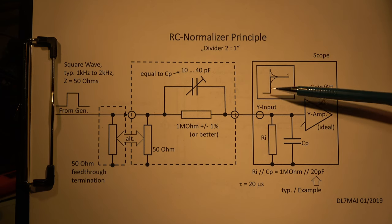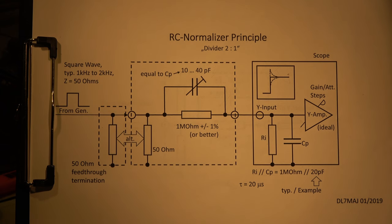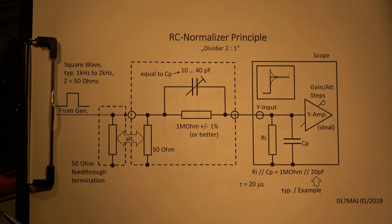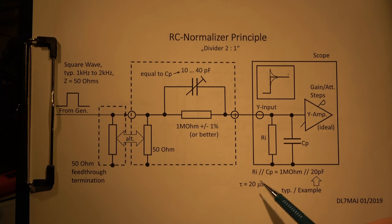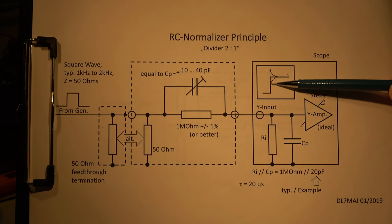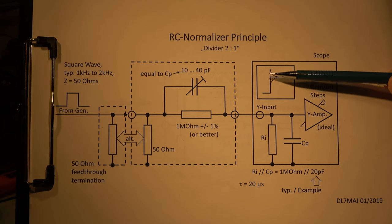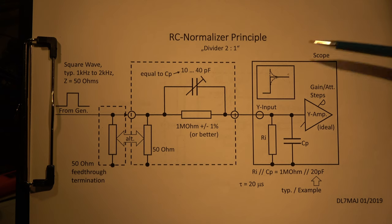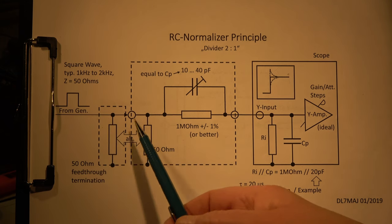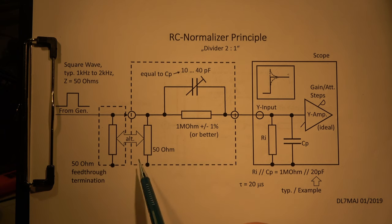This is a square wave from a generator, typically it has 50 ohms and a frequency of one or two kilohertz. The frequency must be considerably lower than the time constant - if we have 20 microseconds, we have to wait at least some hundred microseconds to settle down and have a reference to see if there is an overshoot or a negative undershoot. So at least 500 microseconds to one millisecond is good. It's a 50-ohm generator, so we need a feed-through termination or a resistor in the normalizer, also with 50 ohms.